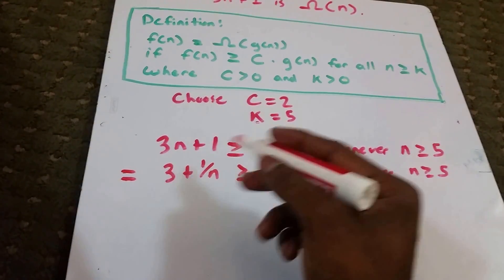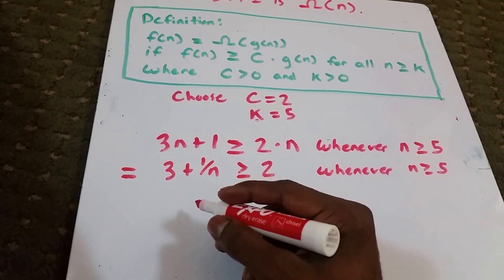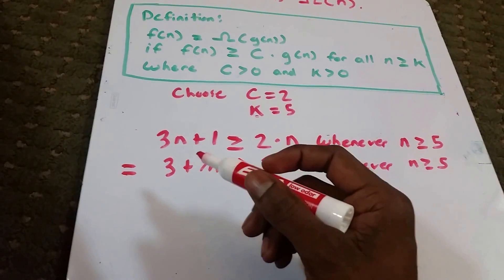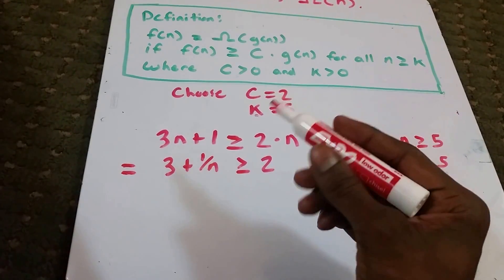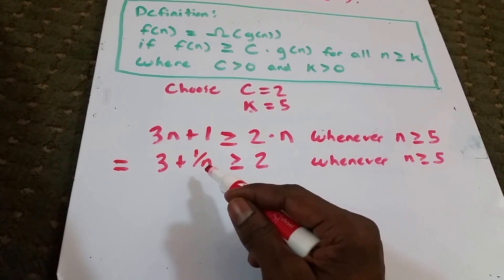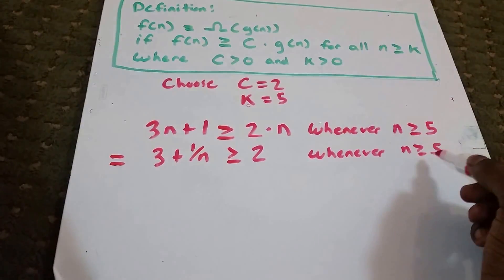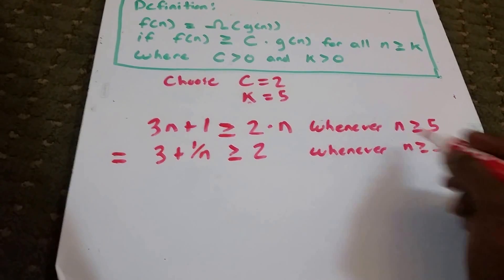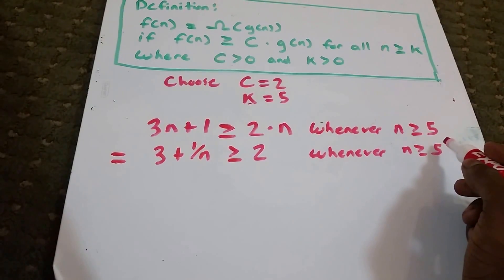Next up, what we want to do is see what this 1 divided by n maximum value is going to be. Since we said whenever n is greater than or equal to 5, the maximum value that n can be is 5.